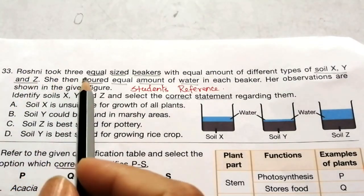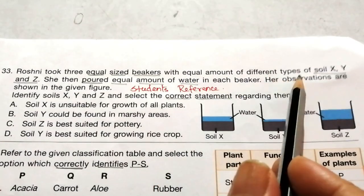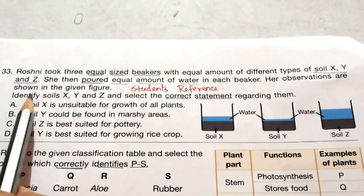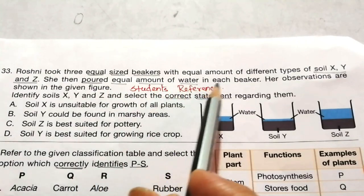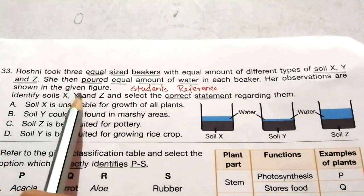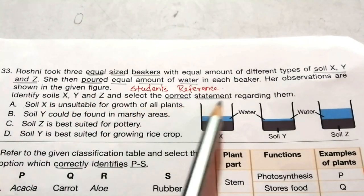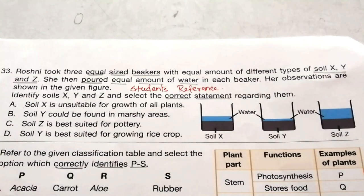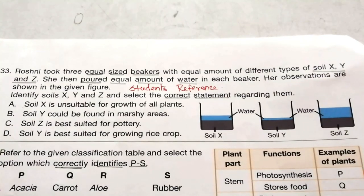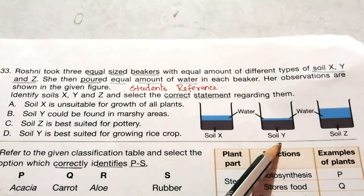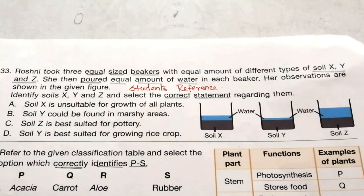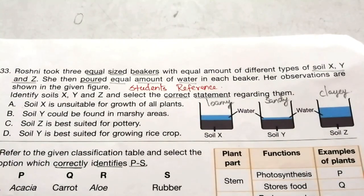Question 33: Roshni took three equal-sized beakers with equal amounts of different types of soil X, Y and Z, and poured equal amounts of water into each. This is a repeatedly asked question. From the given pictures, X is loamy soil, Y is sandy soil and Z is clayey soil. The correct answer is C — soil Z is best suited for pottery.